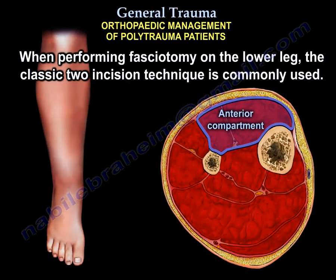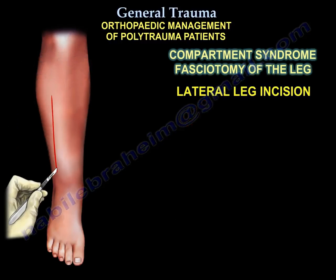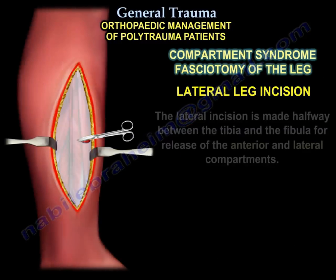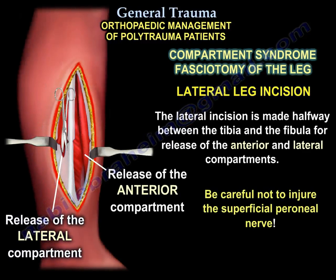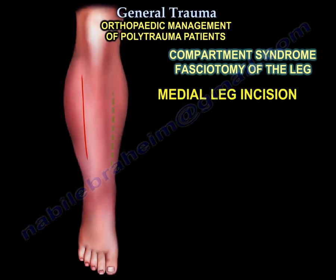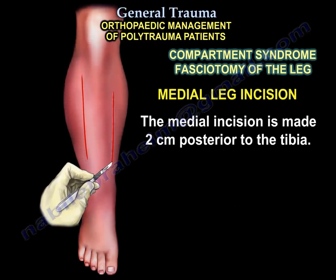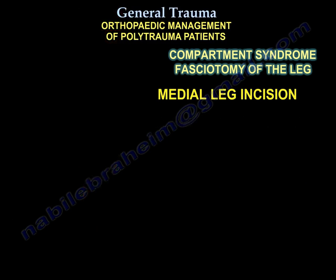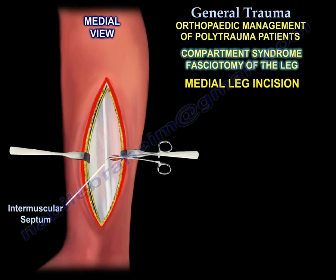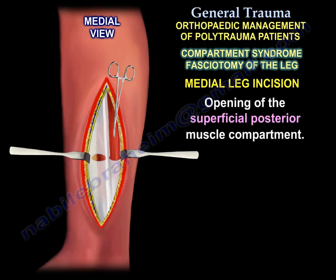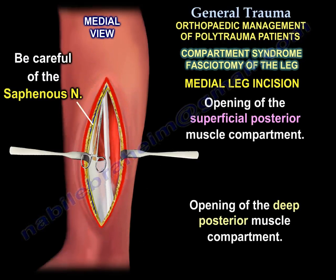When performing fasciotomy of the lower leg, the classic two-incision technique is used. The lateral incision is made halfway between the tibia and fibula to release the anterior and lateral compartments — be careful not to injure the superficial peroneal nerve. The medial leg incision is made two centimeters posterior to the tibia, then you open the superficial posterior compartment and the deep posterior compartment.